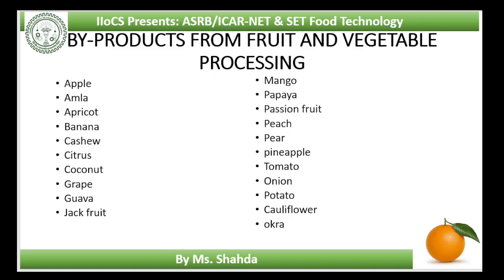Peach is now being grown commercially in certain areas of the north Indian plains and north-western states of Jammu and Kashmir, Himachal Pradesh and Uttaranchal. Peel and core are the main waste by-products obtained from peach, and both are used to prepare alcoholic beverages as well as fruit vinegar.